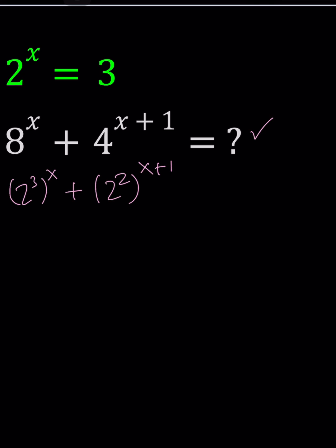We can switch these exponents and write this as (2^x)^3, and here we can write this as 2^(2x+2), which can then be written as 2^(2x) × 2^2.